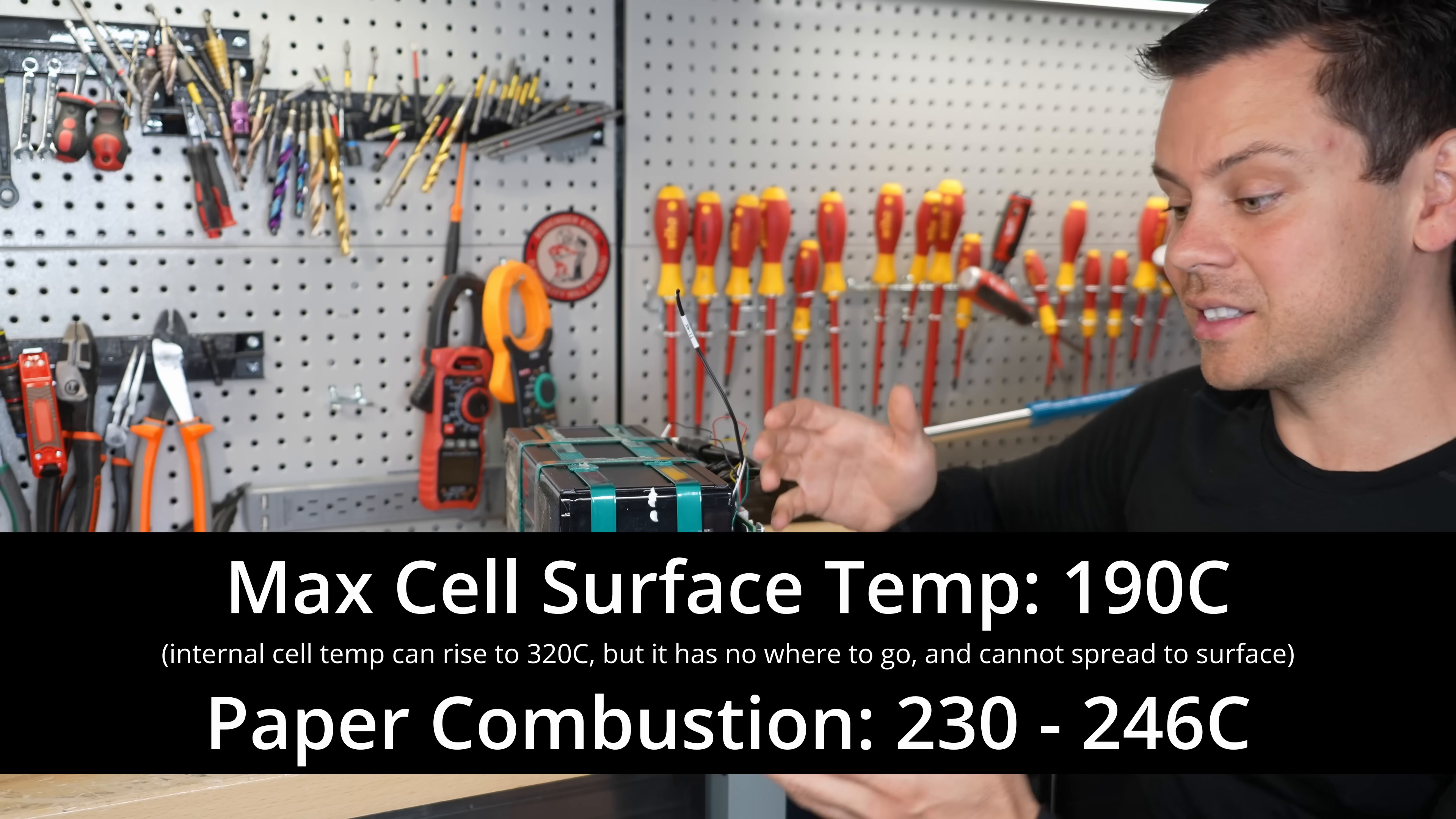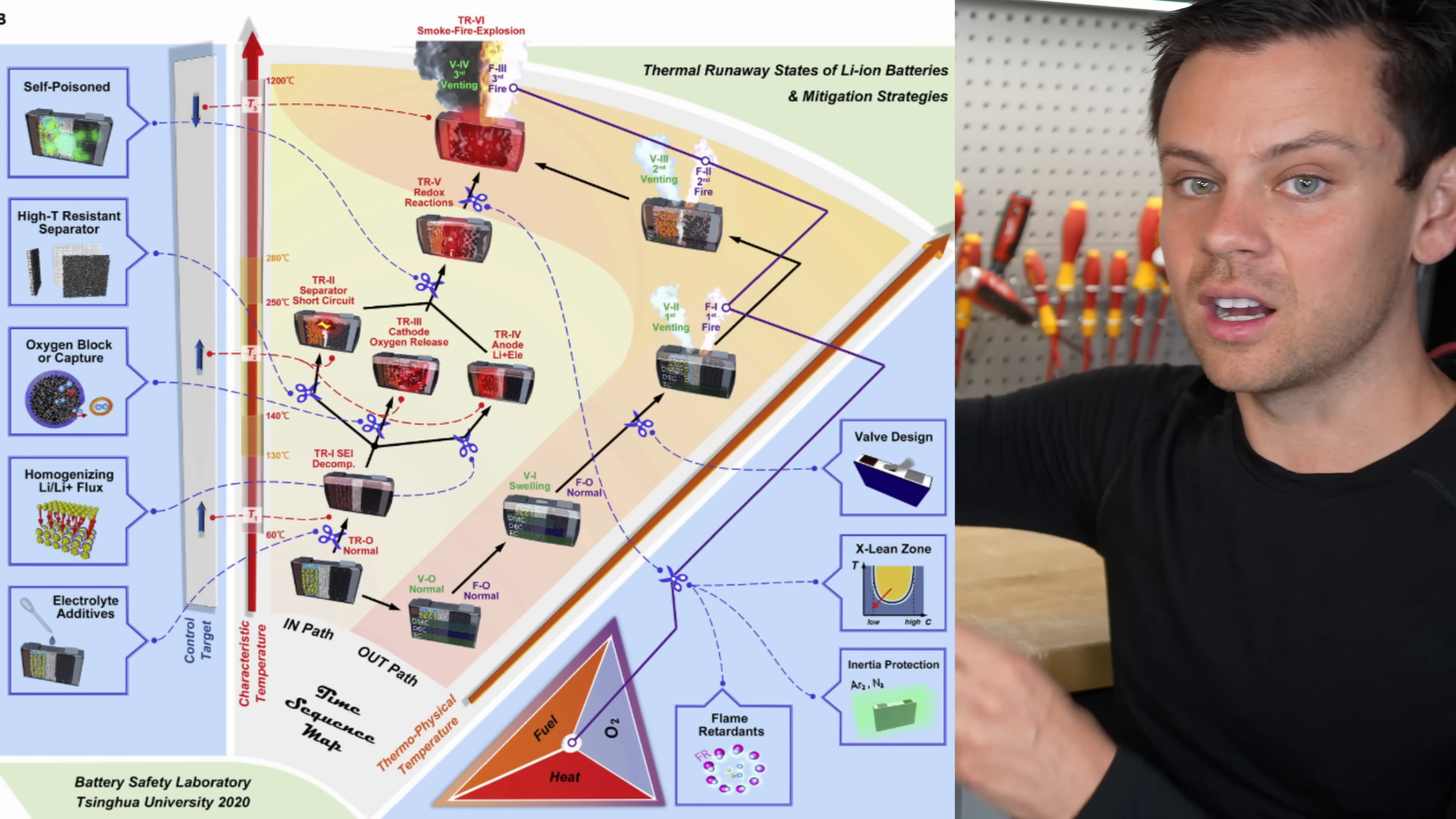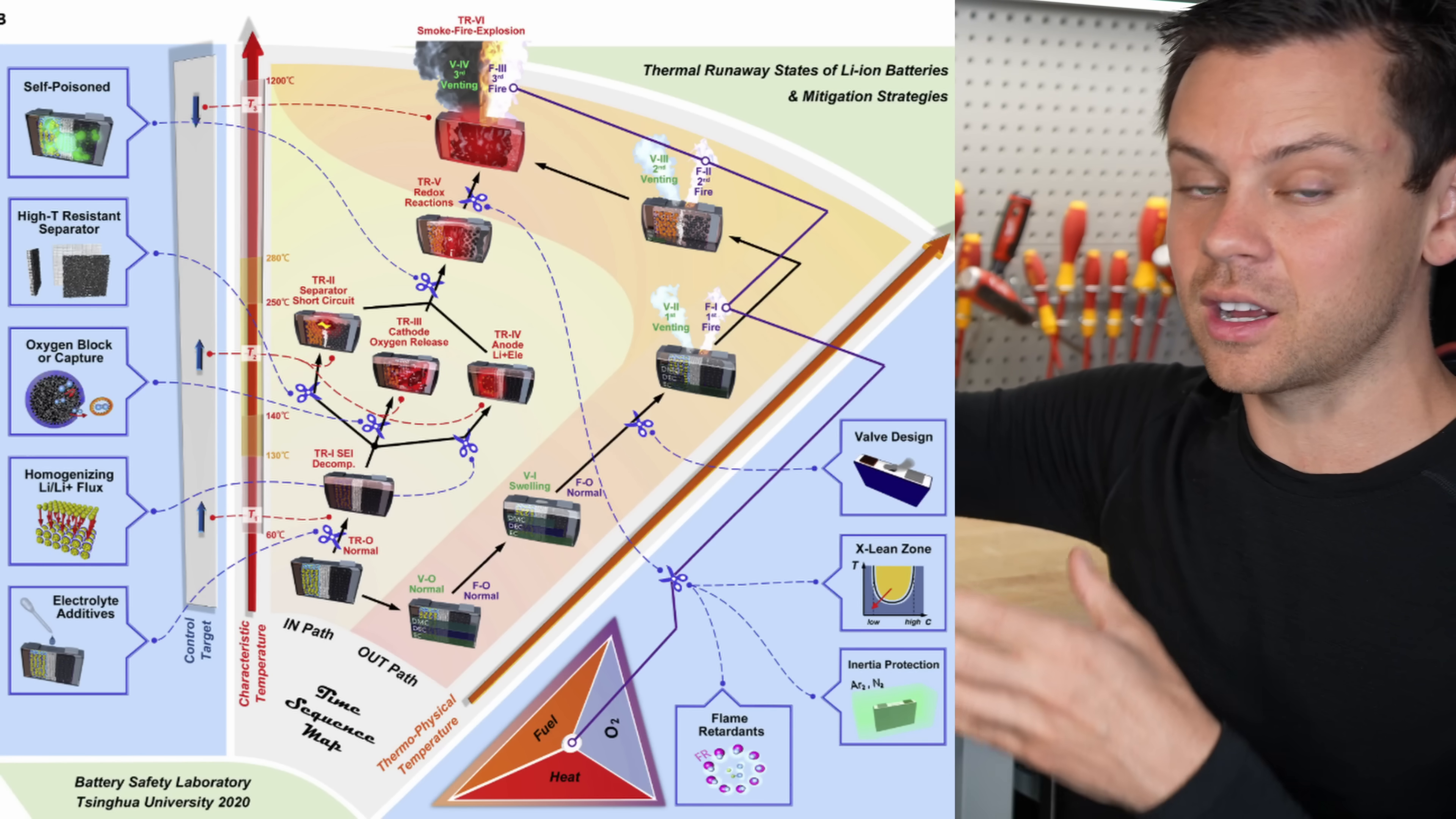of paper on fire. And that's why it's not self-propagating because it can't release oxygen in the rest of the cell, causing more heat to release more oxygen, to cause more heat.